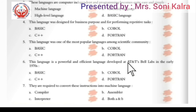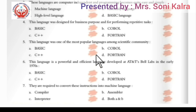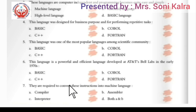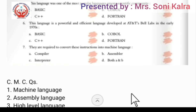Sixth: this language is a powerful and efficient language developed at AT&T Bell Labs in the early 1970s. Note that a question may also come asking where this language was developed — it was developed at AT&T Bell Labs, and the name of this language is C. Point seven: they are required to convert instructions into machine language — compiler does this conversion, assembler also does this conversion, but interpreter does not convert, it only checks. So the answer is both A and B — compiler and assembler.